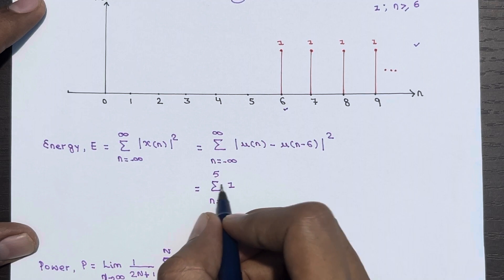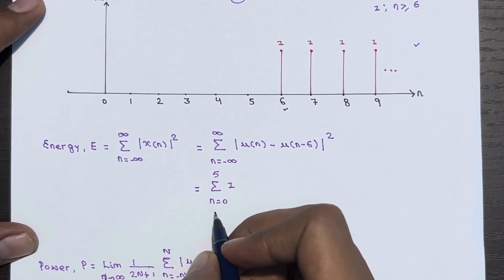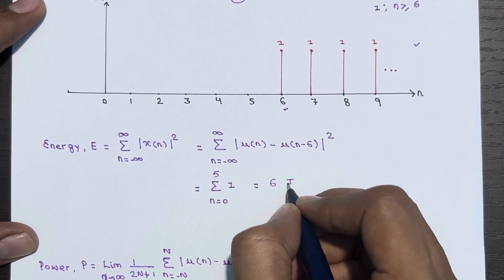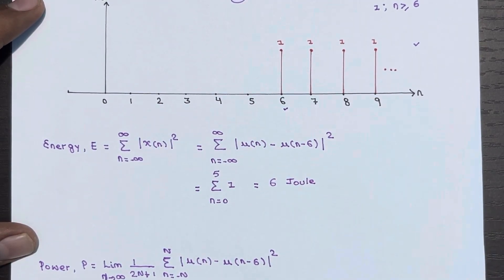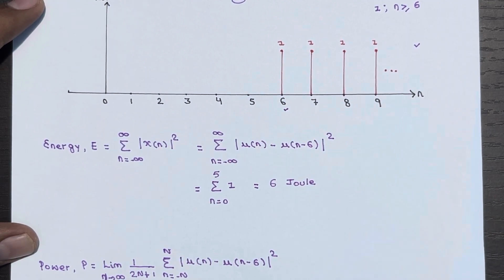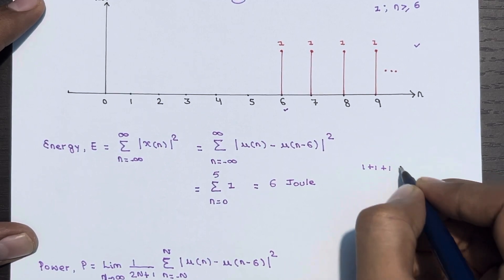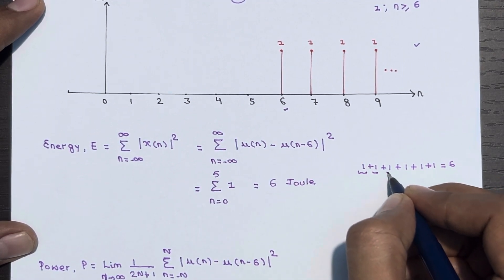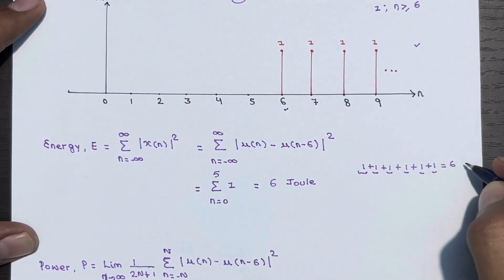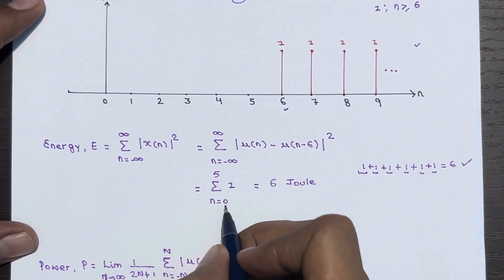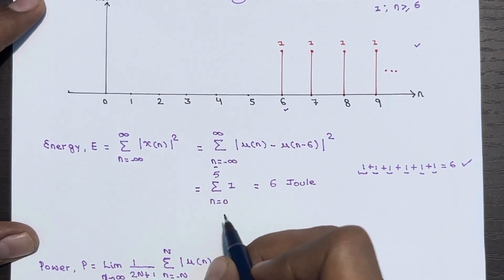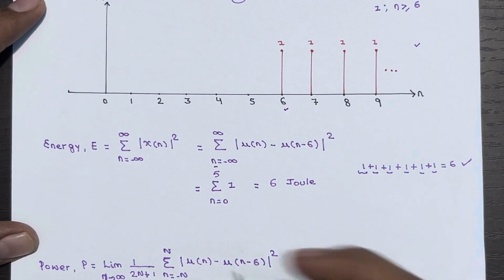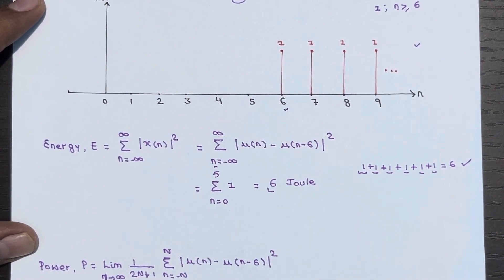So the summation of 1 over the limit ranging from n equal to 0 to 5 becomes 6. That is 6 joules — simple. It is 1 plus 1 plus 1 plus 1 plus 1 plus 1, at n equal to 0, 1, 2, 3, 4, and 5. Since n goes from 0 to 5 that is n plus 1 terms, which is 5 plus 1 equals 6. So the energy is 6 joules.